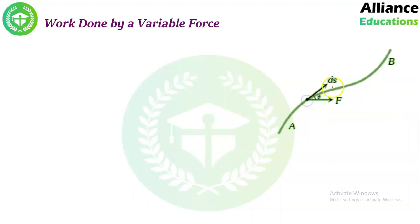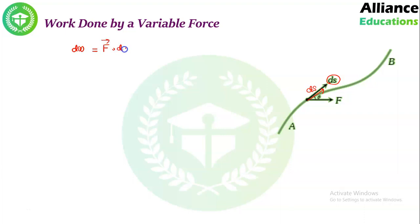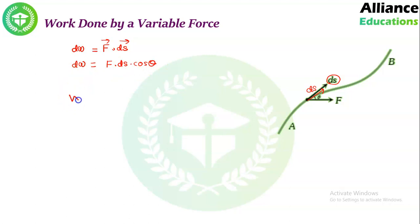Here we consider a small segment where a small displacement ds is covered by force F. So the small work done dw can be written as F·ds. This is for very small work done. But if we want the total work done, then total work done can be obtained by integrating the small work done.